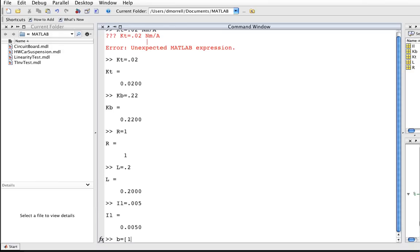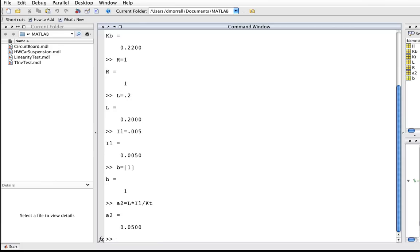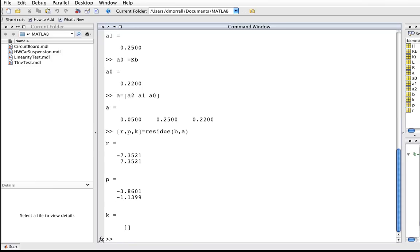OK, and now we'll define the vectors. We'll define vector B to be 1. We'll define A2 to be L times IL divided by KT, and A0 to be KB. And then we'll define a vector A to be the components of the vector. And now we're ready for the magic invocation. R, P, K is equal to residue B, A. MATLAB thinks for just a little bit and gives us these values. So now we'll put these values back into our partial fraction expansion.